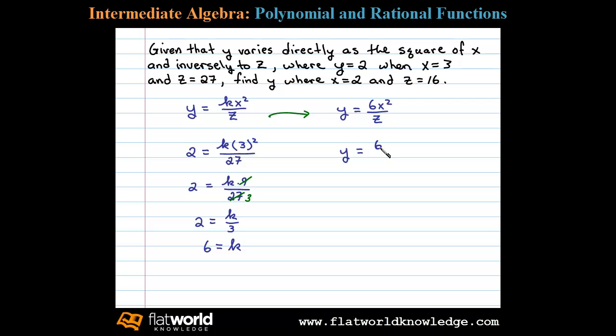So substituting we can see we have 6 times, when x is 2, so 2 squared over 16. We can simplify and then find y. Here we have 24 over 16 which reduces to 3 halves. So the y we're looking for is 3 halves.